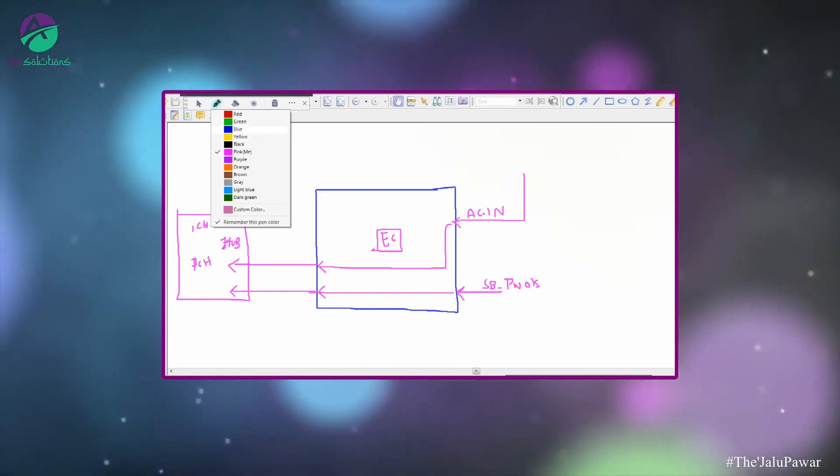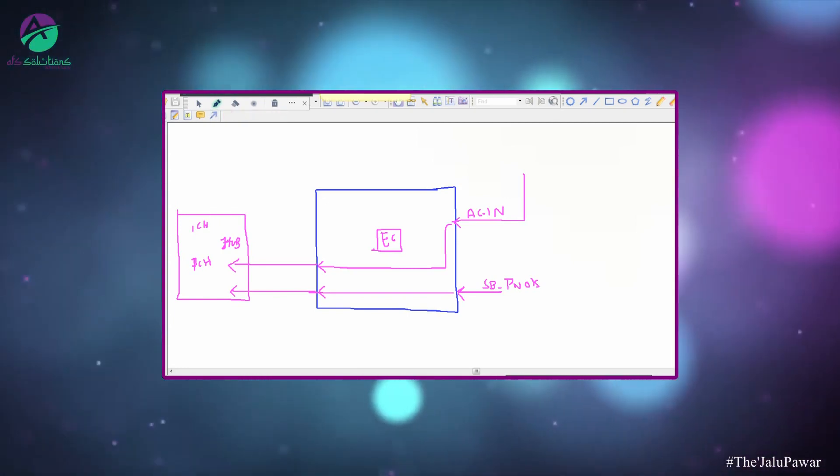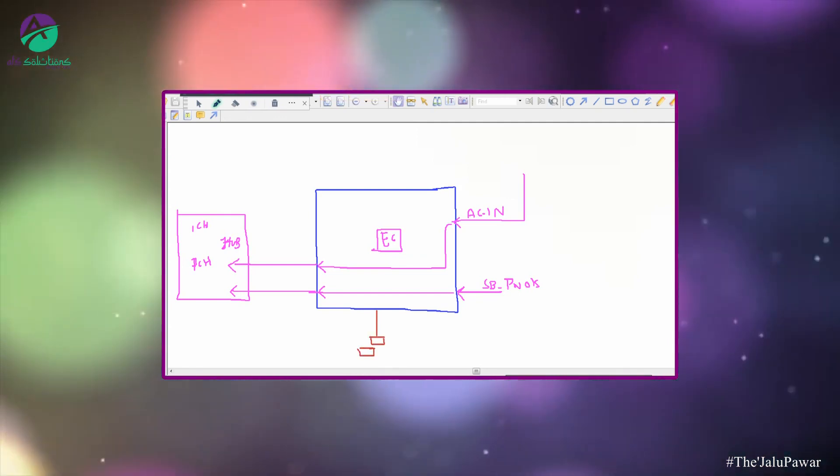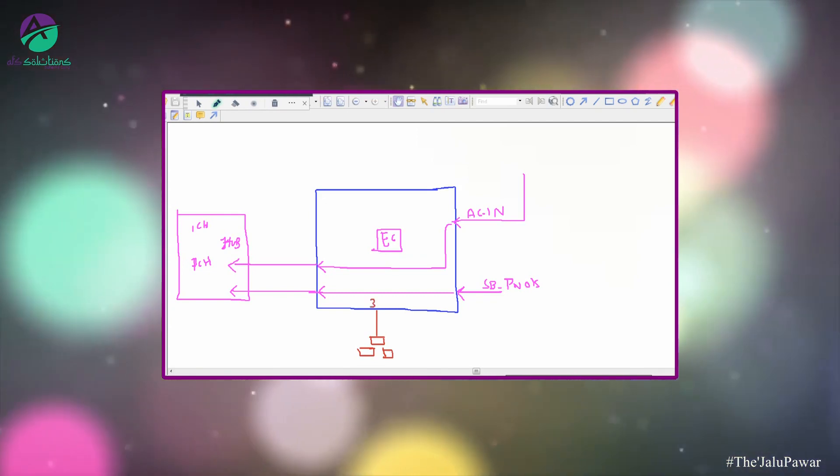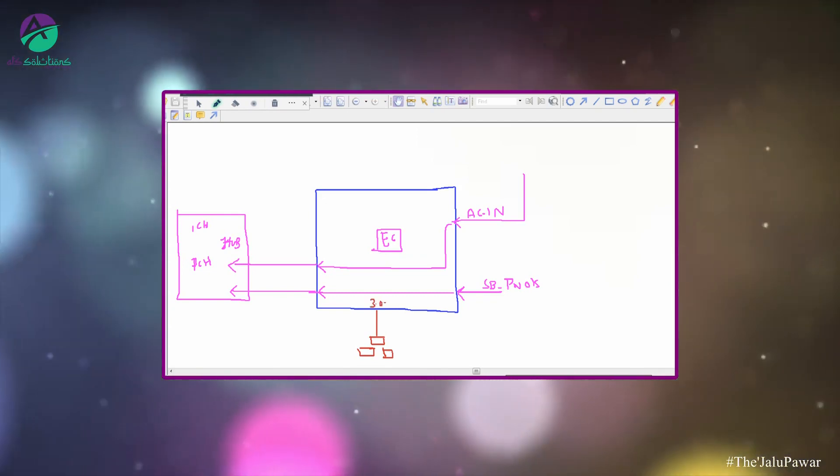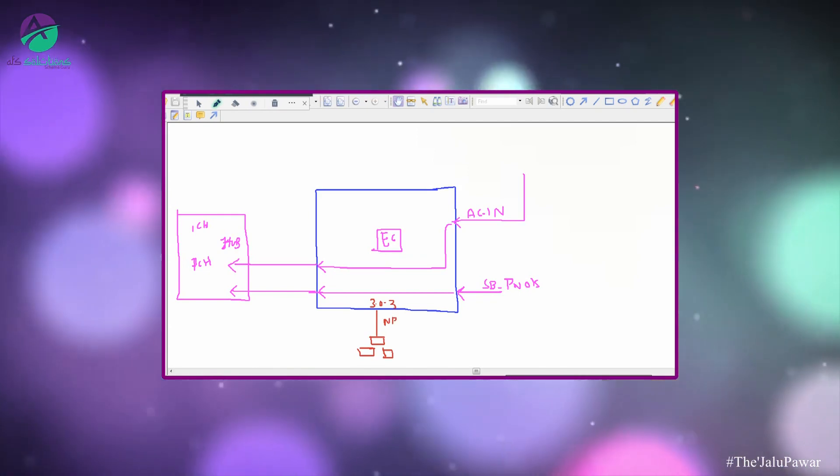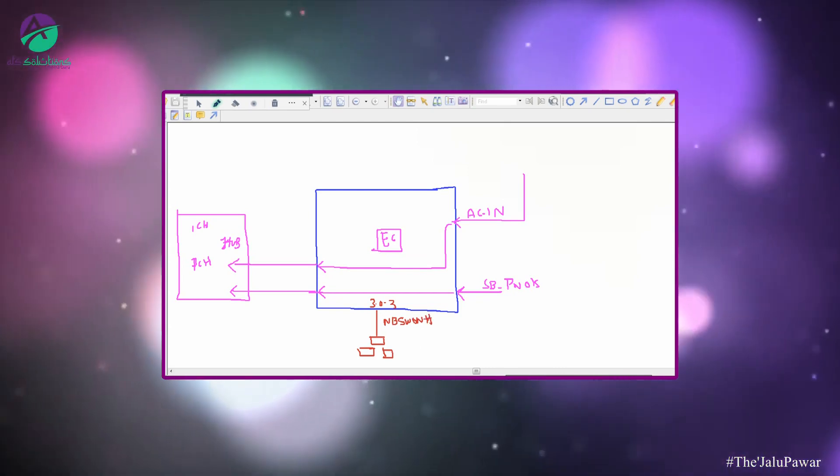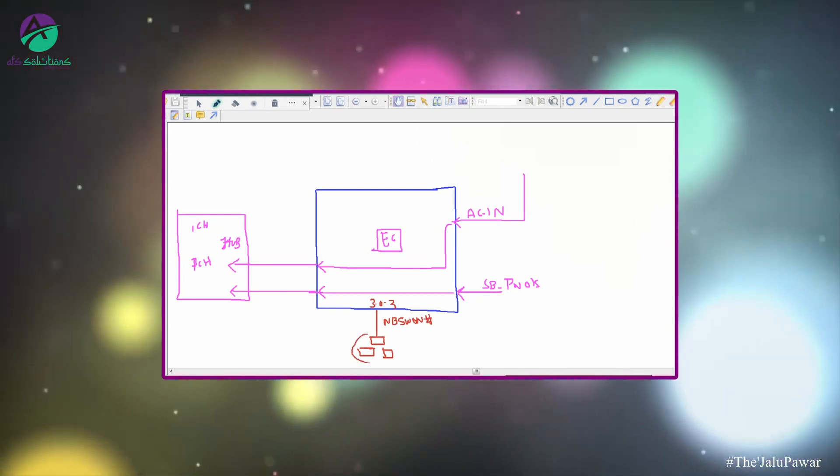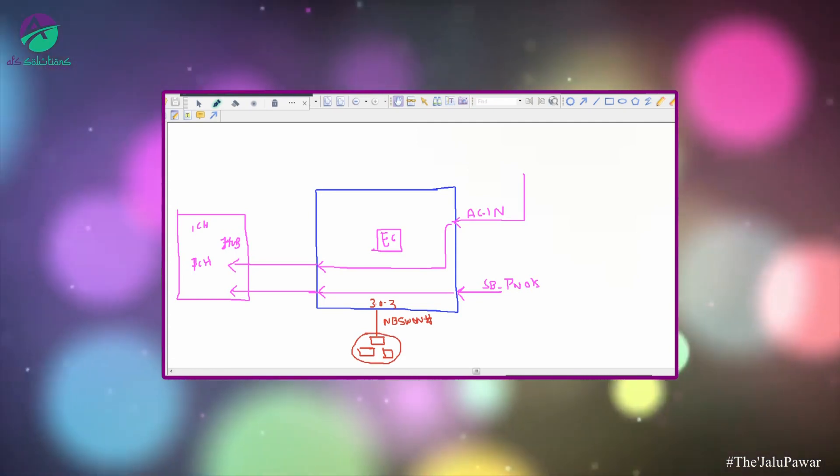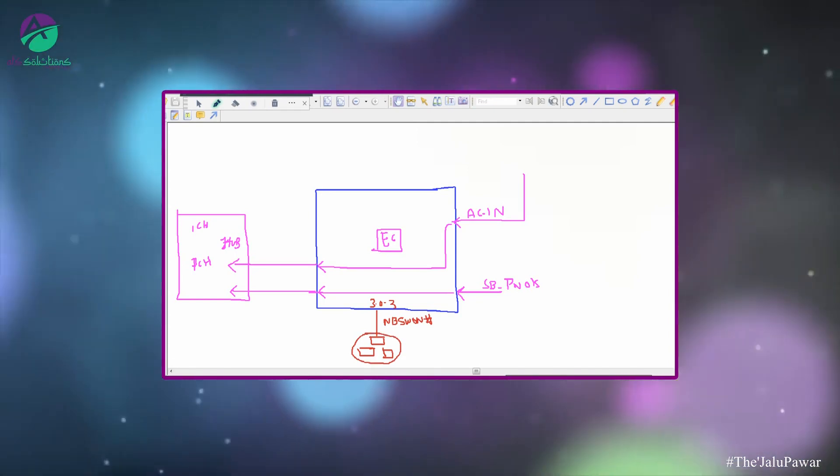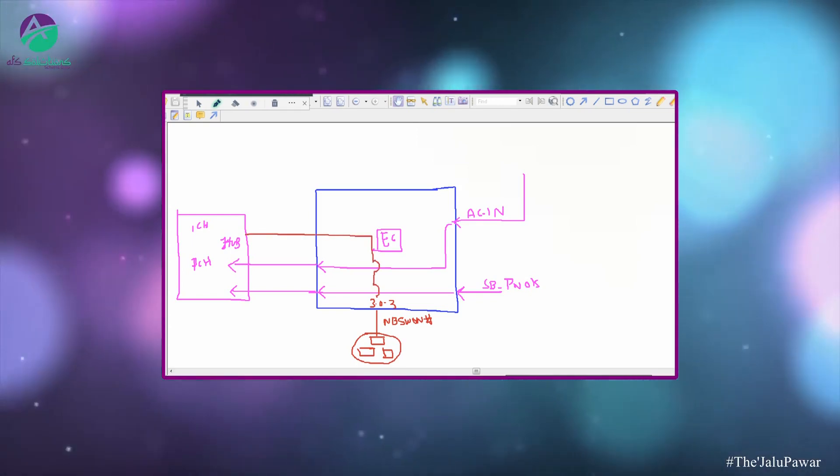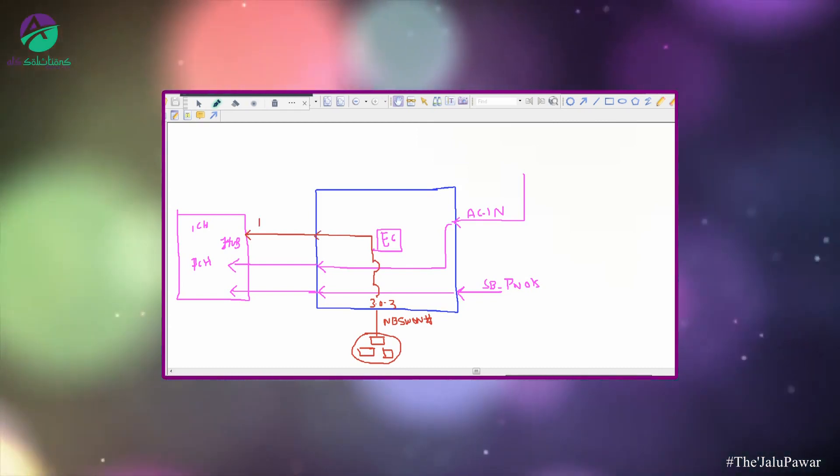And third, on off. Three, zero, three. Means it is called as notebook switch on. When the notebook switch on goes, if it is pressed by the user interface, the same information is passed to the hub also called as DNB switch on.